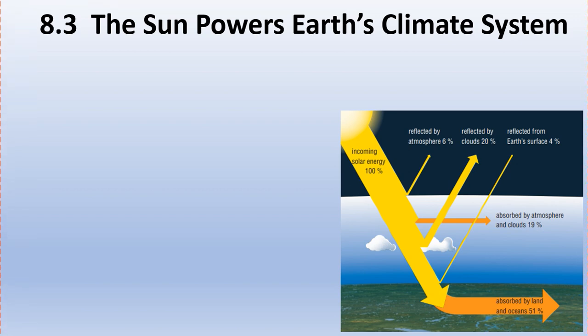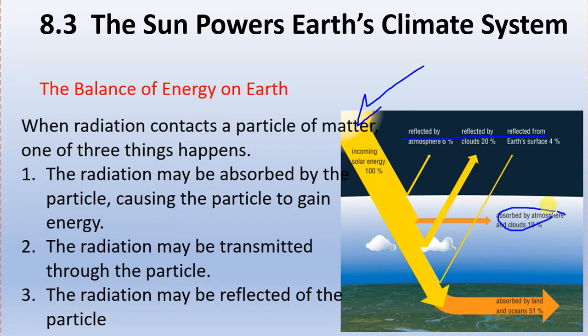8.3 The Sun powers Earth's climate system. The Sun's energy, as you can see right here, is always bombarding the Earth. One of two things can happen: it can either be reflected by the Earth or absorbed by different parts. The balance of Earth's energy - you can read here - radiation incoming can do a couple of things. The radiation gets absorbed, it gets transmitted, and it may also be reflected.